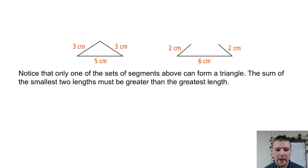Notice that only one of the sets of segments above can form a triangle. The sum of the smallest two lengths must be greater than the greatest length.